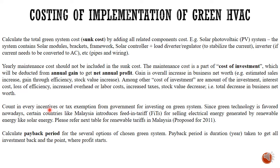You have to count in every incentive. For example, for a green system there is tax exemption from the government because you are investing in a green system, so you have to count in everything. As we all know, green technology is now favoured in Malaysia. To promote this, the government introduced Feed-in Tariff previously, and now we have Net Energy Metering for selling electrical energy generated by any renewable energy powered system, for example a photovoltaic system.